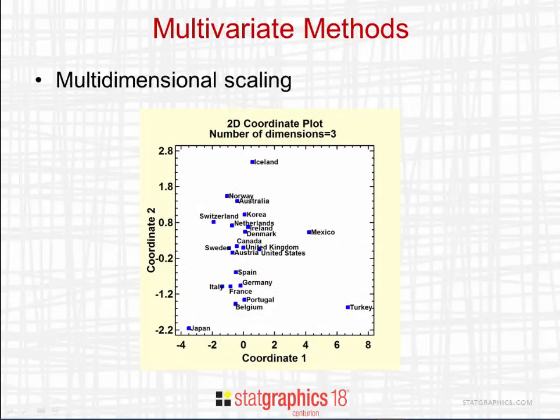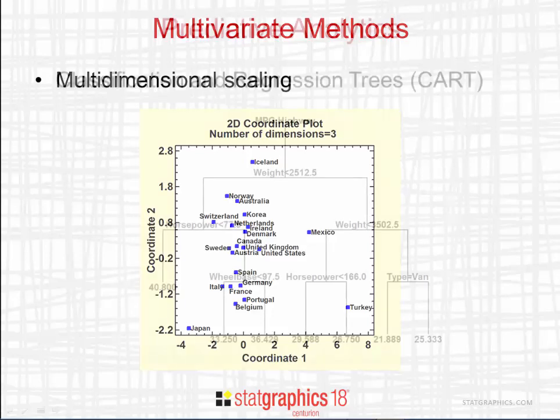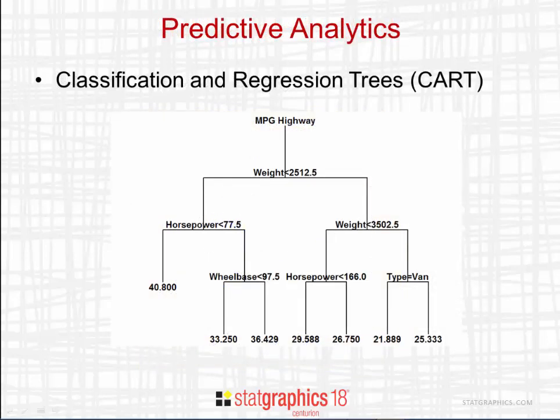In the multivariate methods section, we've added a procedure for multidimensional scaling. MDS takes observations in a large-dimensional space and reduces it to a map in either two or three dimensions. For predictive analytics, we've added a new procedure that performs CART — classification and regression trees — which builds a tree that allows one to predict the values of either a categorical or quantitative variable.